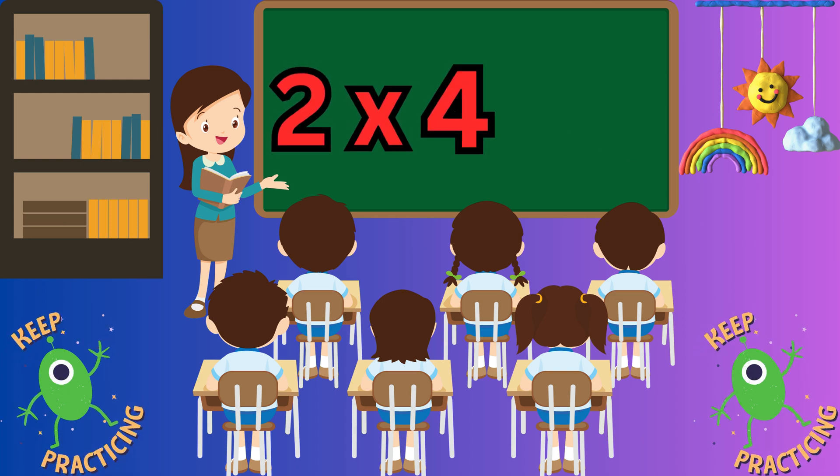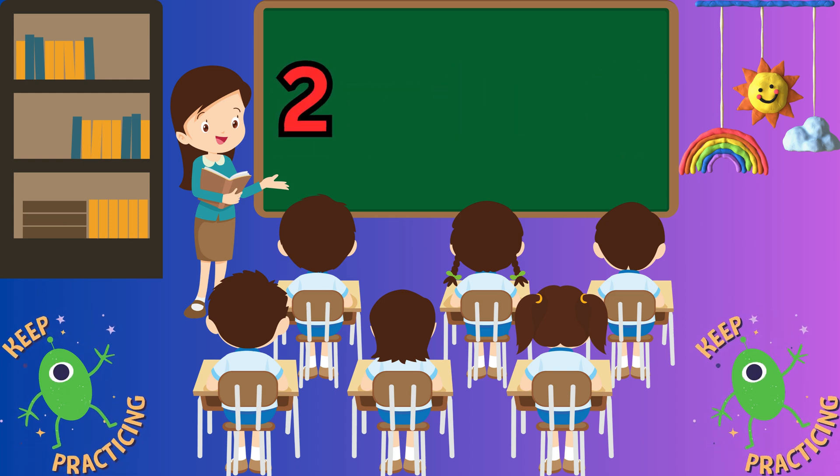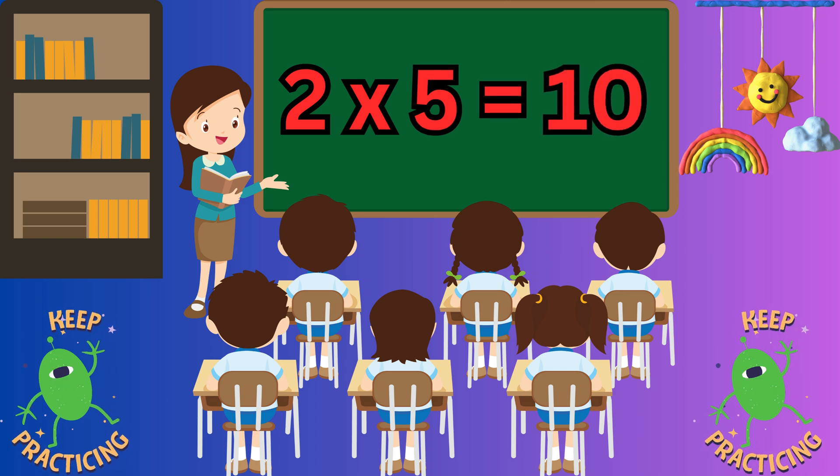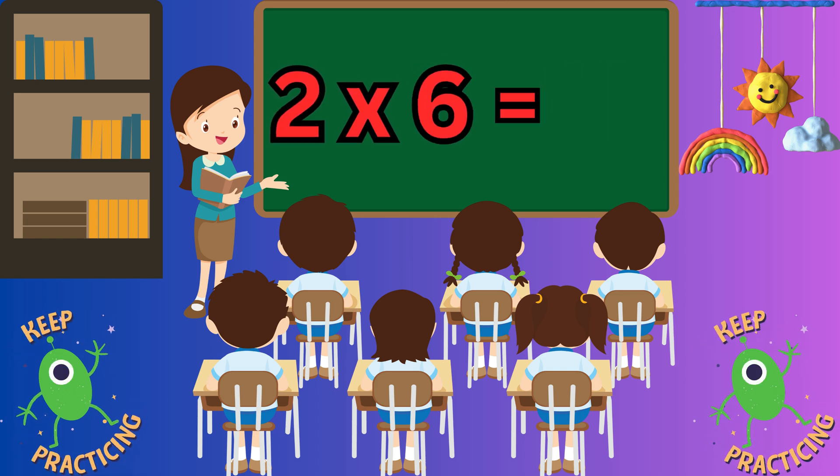Two fours are eight. Two fours are eight. Two fives are ten. Two sixes are twelve.